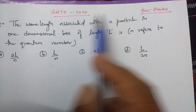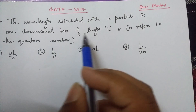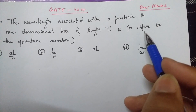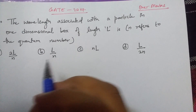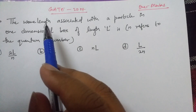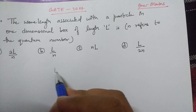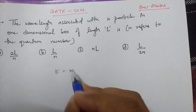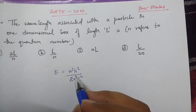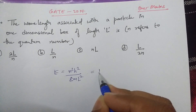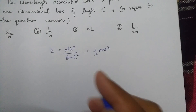The first question was for one mark: the wavelength associated with a particle in a one-dimensional box of length L is — where n refers to the quantum number. You have four different options. To solve this, we need to build a relation between wavelength and L. We'll use the energy formula E = n²h²/(8mL²) and the kinetic energy formula E = ½mv².